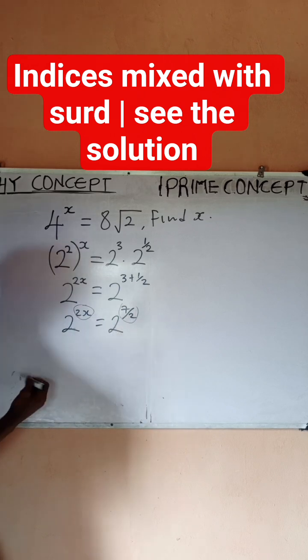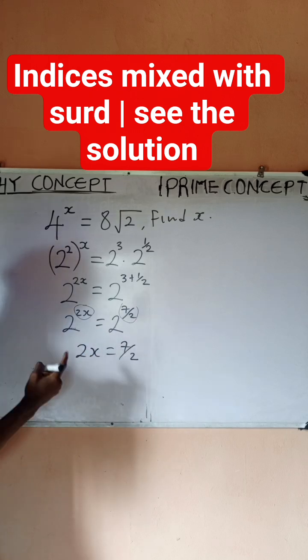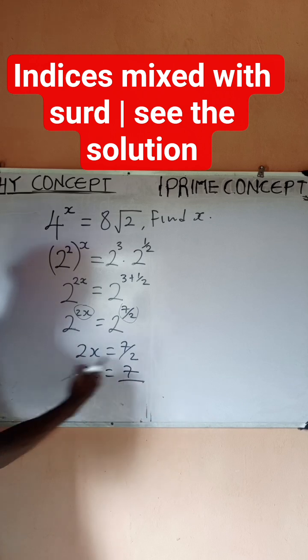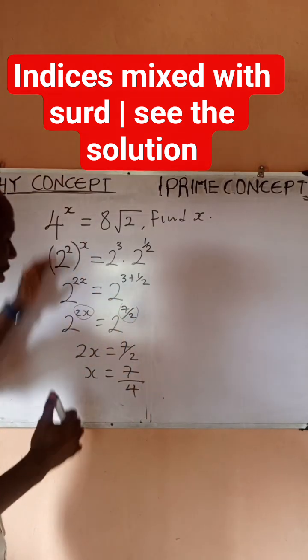So by comparison I can now equate this power since their bases are the same. So I would say two x equals seven by two, so that x becomes seven over two times two, which is what, four. So my x is actually seven over four.